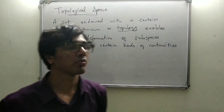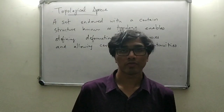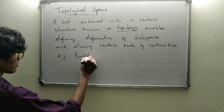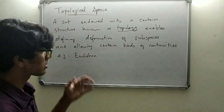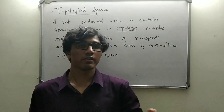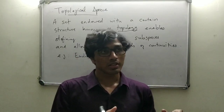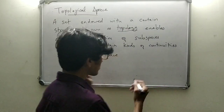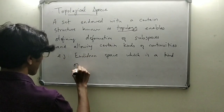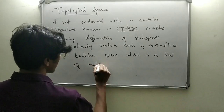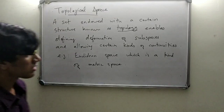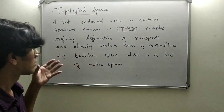The most basic example of a topological space is the familiar Euclidean space. Euclidean spaces are a certain type of topological space known as metric spaces. A metric space defines the structure of the space through something known as a metric — simply put, a distance function. The Euclidean metric defines the topology of Euclidean space.